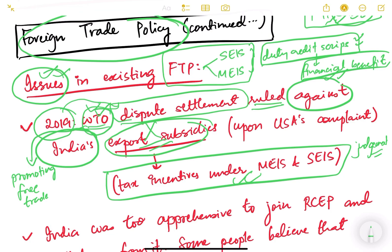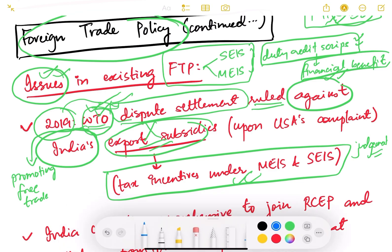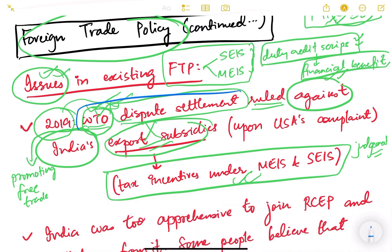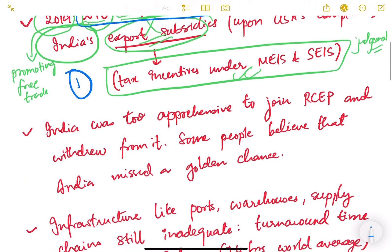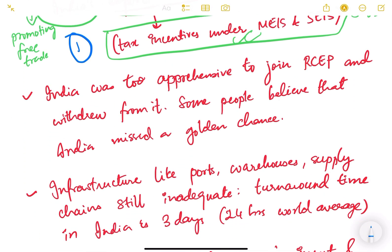So this was the first shortcoming — our foreign trade policy was not compliant with WTO norms. Had we been compliant, USA would not have complained, or we should have very intelligently designed our export tax incentives. We could not do that, so that was issue number one. The second issue is that India did not join RCEP — we withdrew from RCEP, we were too apprehensive to join it.